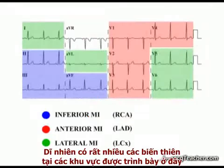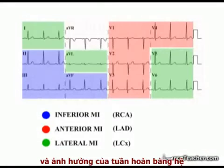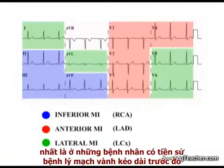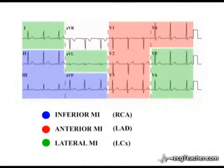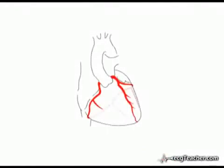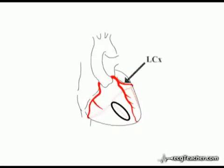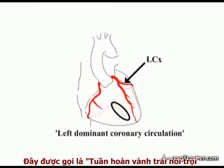Of course, there are many variations on the basic correlations outlined here, depending on the variation in coronary artery anatomy between individuals and the impact of collateral formation in patients with a long history of ischemic heart disease. To give one example: in 10% of individuals, the posterior descending branch supplying the inferior surface of the heart arises from the left circumflex artery rather than the right coronary artery. This is termed a left dominant coronary circulation.